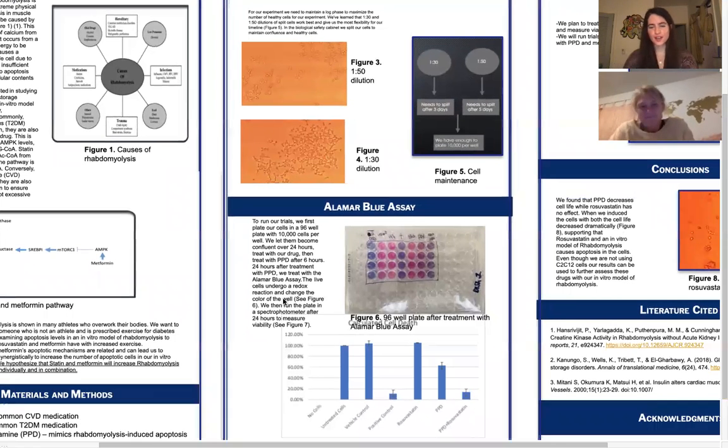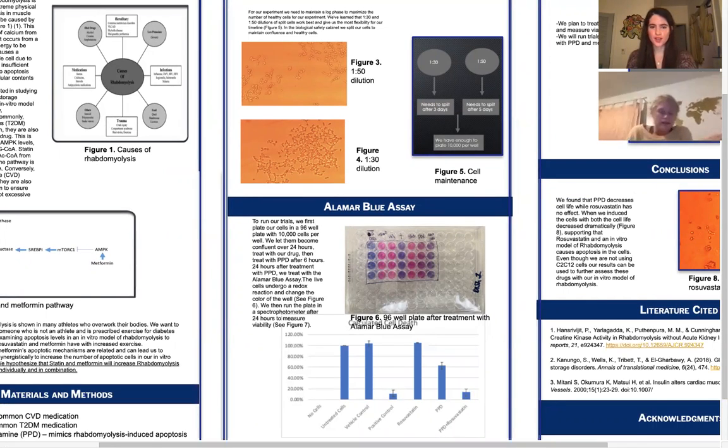So as Liza said, one of the last steps of our experiment as each trial runs is to run the Alamar blue assay. So here in figure six, you can see the 96-well plate with the cells. And this is after we treated them with the Alamar blue assay agent, and they change color based on the cell's viability. And this is because the live cells undergo a redox reaction that the dead cells, of course, cannot. So when they are originally plated, they all look kind of that purplish color. And then more viable cells after 24 hours that we wait before we put them in the spectrophotometer, they start to turn that nice pinkish color.